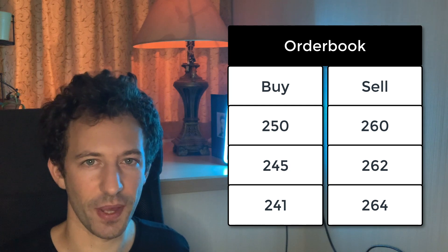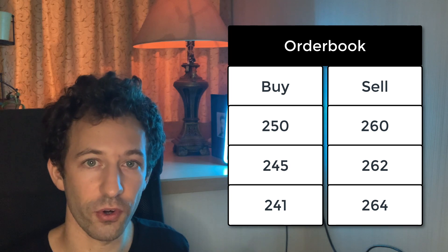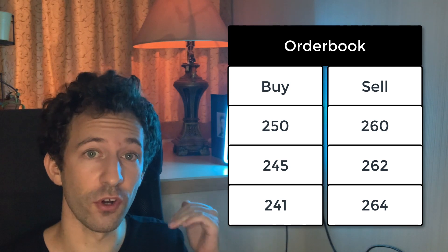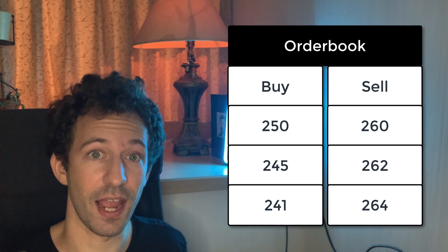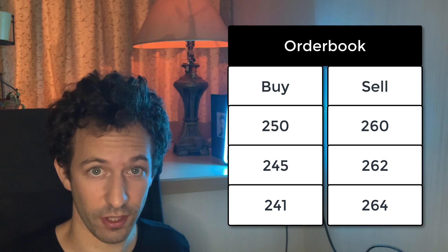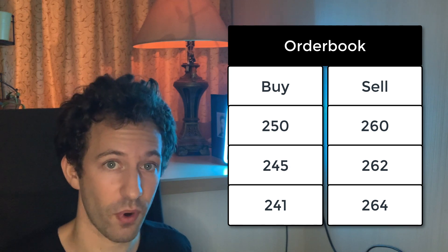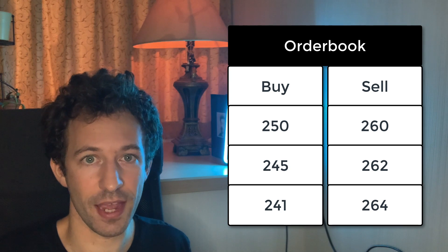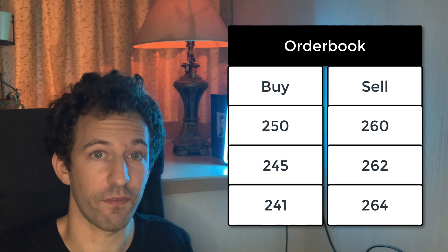This order is put into a database that we call an order book. An order book is a database with two columns: buy orders and sell orders. On each column, the orders are sorted by price. For sell orders, they are sorted from the lowest price to the highest, because the best sell orders have a low limit price. For buy orders, it's the opposite — sorted from the highest price to the lowest — because the best buy orders are the ones with a high limit price. At this point, you basically have a summary of the intentions of traders, but no trading has happened yet.